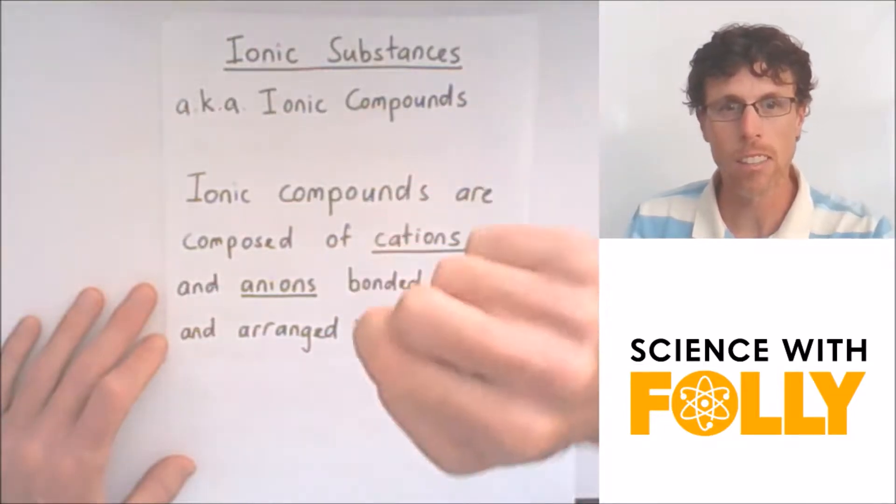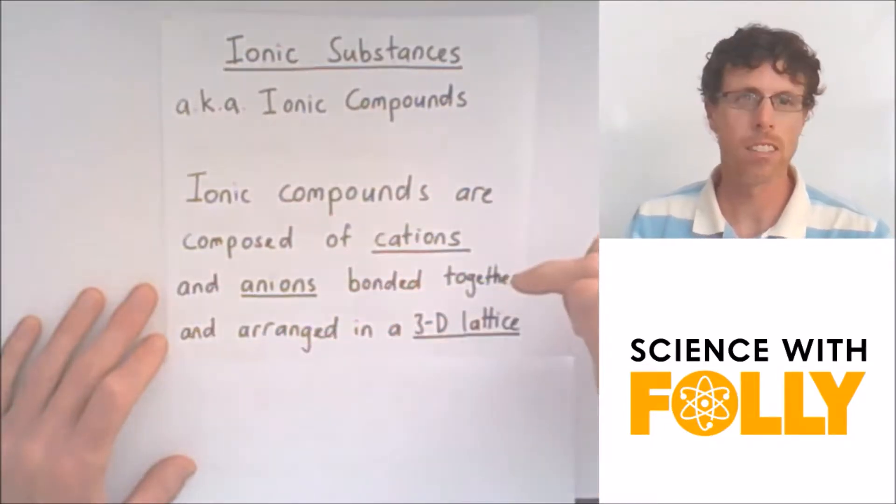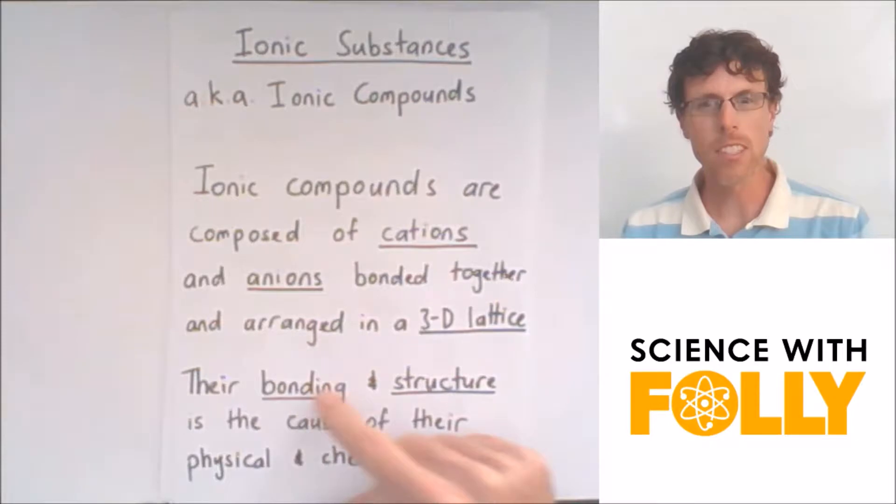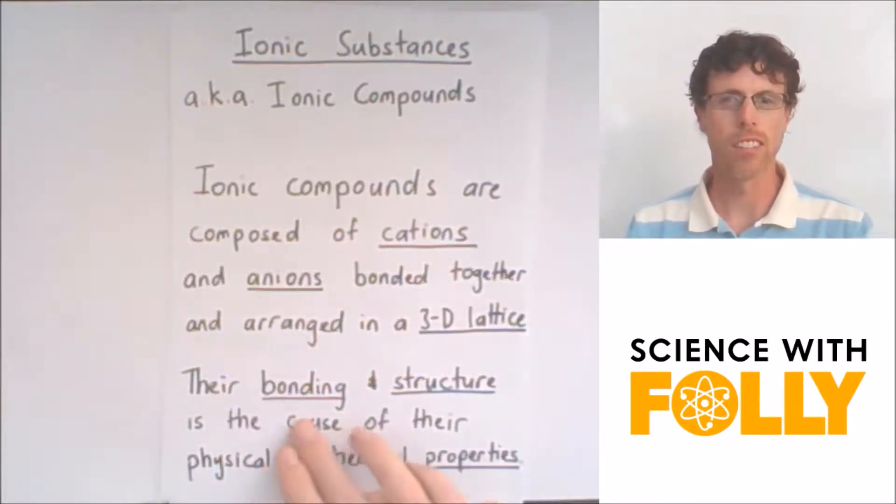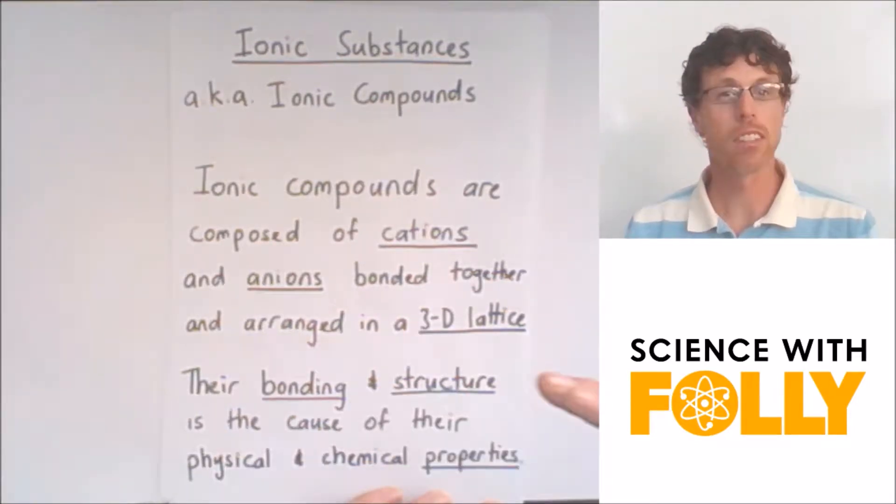Remember, a cation is a positively charged ion and an anion is a negatively charged ion. And the key thing with ionic compounds is that their bonding and structure is the cause of their physical and chemical properties. And you have to always be able to relate their physical and chemical properties to their bonding and structure.